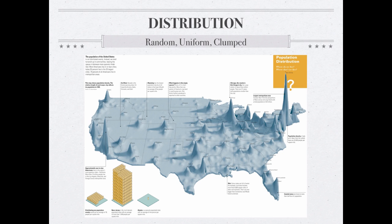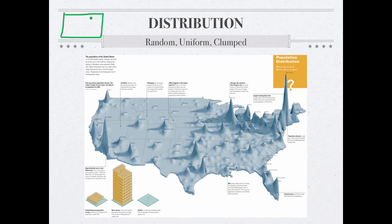In a random distribution pattern, you will see individuals scattered throughout an area without any particular rhyme or reason — they are just kind of all over the place. An example of this is many plant species because their seeds are carried on the wind, so they grow wherever the wind drops them.